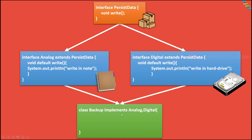Now we will try to do the same with interfaces. We have a PersistData interface. Instead of Analog and Digital as classes, we rename them to interfaces. Since an interface inherits from another interface using extends, we create a default write method in Analog that prints 'write in note', and a default write method in Digital that prints 'write in hardware'.